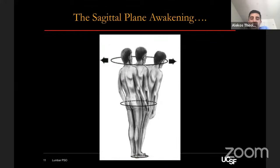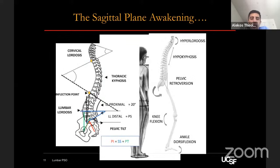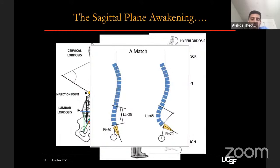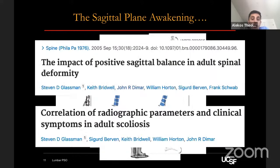Then came the sagittal plane awakening. Dubousset talked about his cone of economy. We had much more focus on radiographic alignment — distribution of lordosis, compensatory mechanisms for maintaining correct sagittal plane, and the importance of pelvic shape. Russoli gave us the shape of the spine. Landmark articles in the mid-2000s demonstrated that sagittal plane compromise significantly jeopardized outcomes and patients' functional status.